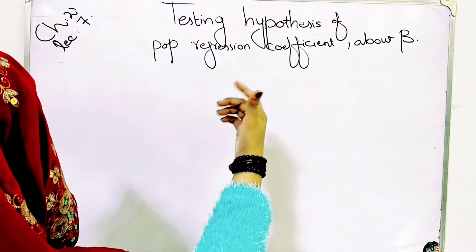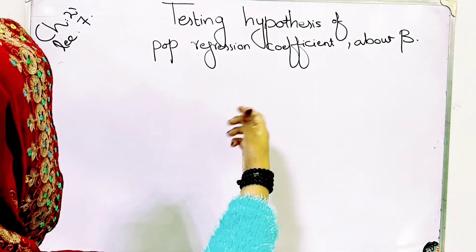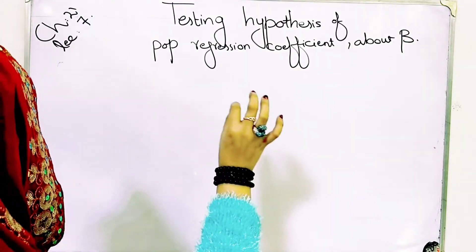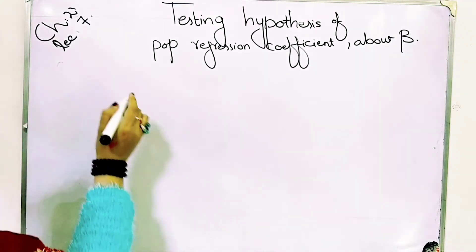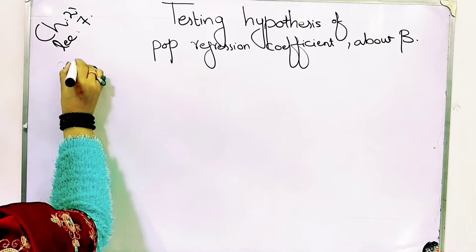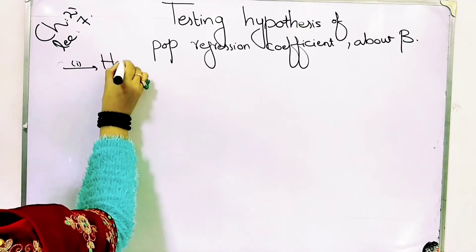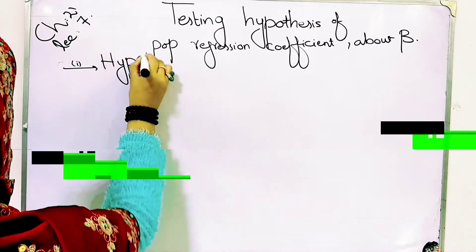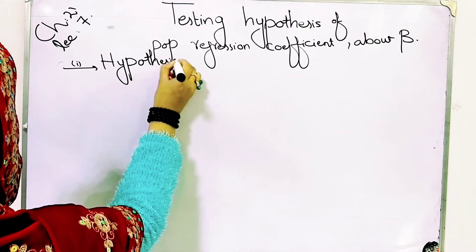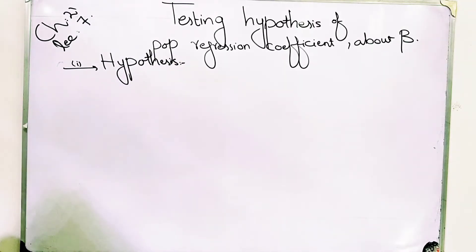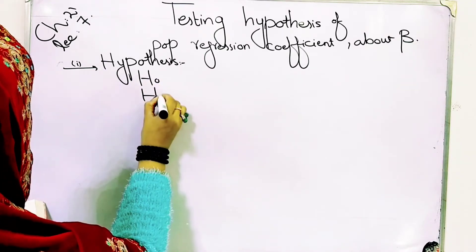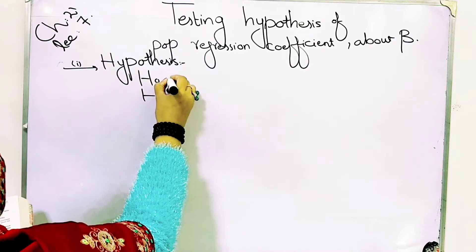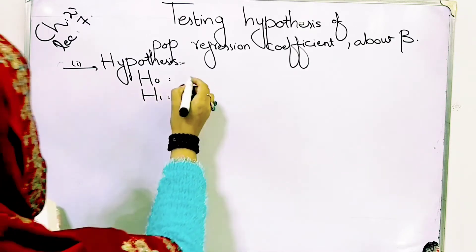For testing hypothesis of the population regression coefficient about beta, we also have six steps, involving some calculation and test statistics. The first step requires us to describe our hypothesis. We have to do three types of hypothesis formulations.